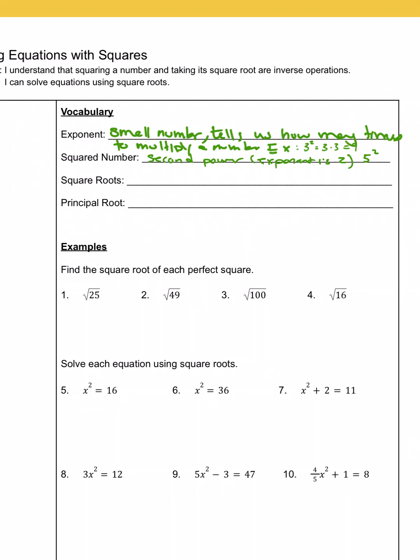The square root is the inverse operation of squaring a number. For example, square root of 25 means what number did I multiply by itself twice, because squaring means twice, to get that value. So for 25, I multiplied 5 by itself two times. So the square root of 25 is 5.